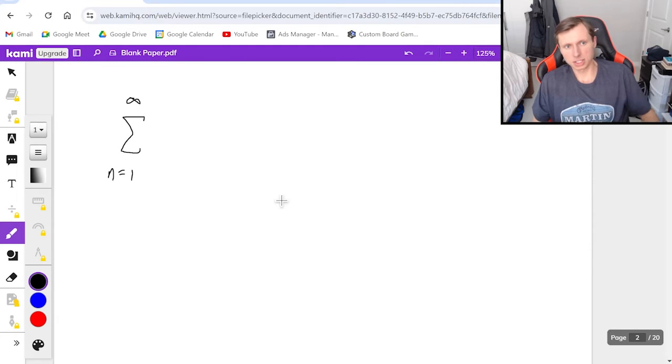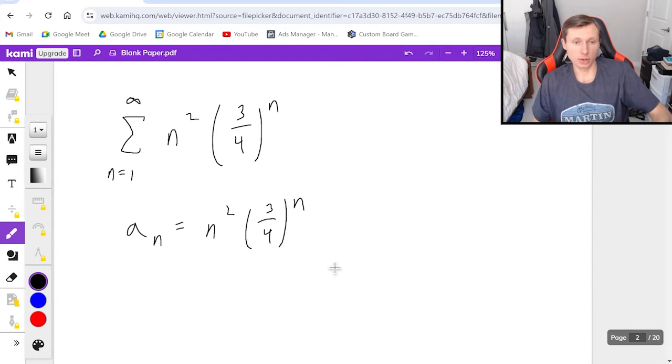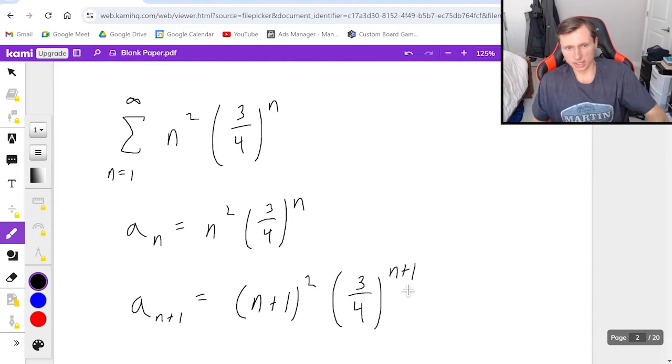So the first one is the series from n equals 1 to infinity of n squared times 3 fourths to the n. So my a sub n is n squared times 3 fourths to the n. By the way, in case you're curious, this is not a geometric series because this n squared here kind of ruins it for us. So now I'm going to say a sub n plus 1 is quantity n plus 1 squared times 3 fourths to the n plus 1.